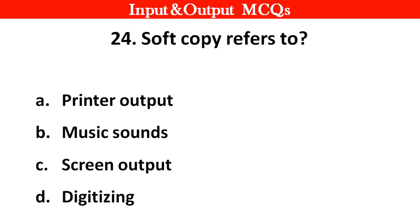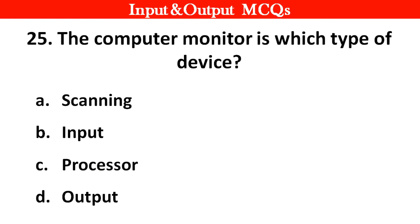Next question. Soft copy refers to: A. Printer output, B. Music sound, C. Screen output, D. Digitalizing. Right answer is option C: Screen output. Next question. The computer monitor is which type of device? Right answer is option D: Output. Thank you.